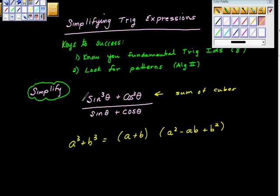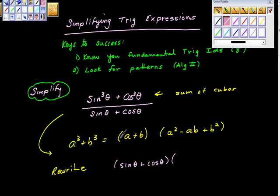I'm going to rewrite this. So here's my rewrite. I can break this up into the ab is sine theta plus cosine theta times, a is sine, so sine theta squared.